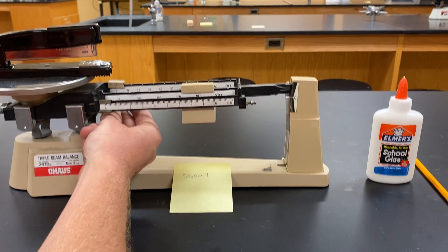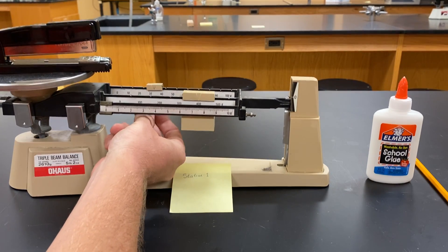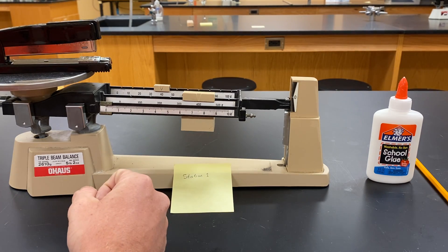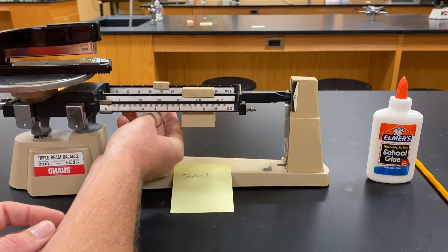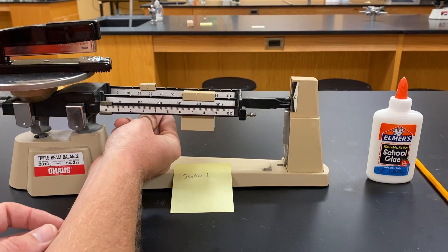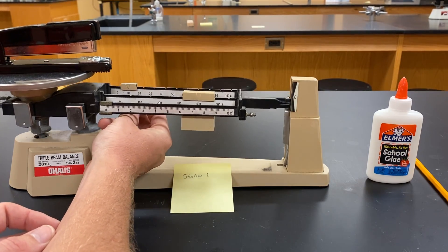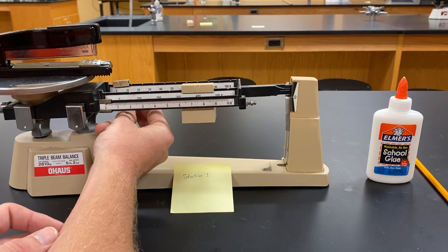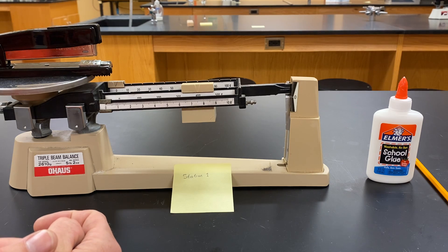Now we're going to move over this medium-sized weight until the arm drops. It's got too much weight at 40. Back to 30. Back to 20 is still too much. 10 is also too much. We're going to leave it at zero.